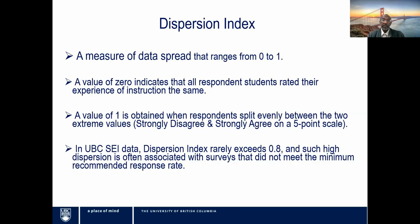The Dispersion Index is a measure of data spread — how variable the students' responses are. The dispersion index we use ranges in value from 0 to 1. A value of 0 indicates that all respondents rated their experience of instruction the same, with no variation in the data. A value of 1 is obtained when respondents are split evenly between the two extremes — strongly agree and strongly disagree. In our UBC Student Experience of Instruction data, dispersion index rarely exceeds 0.8, and usually such high dispersion is associated with a section that did not meet the minimum recommended response rate.